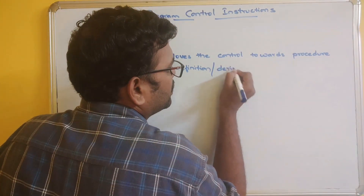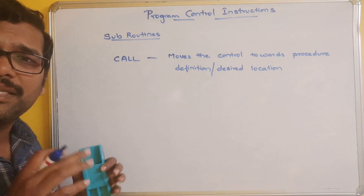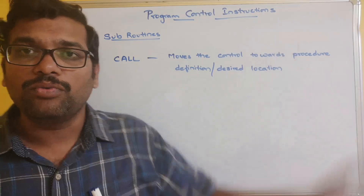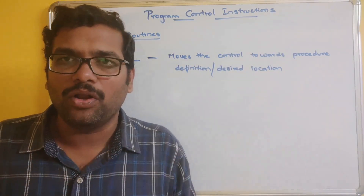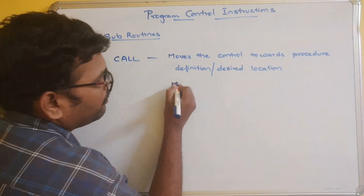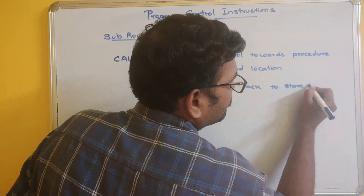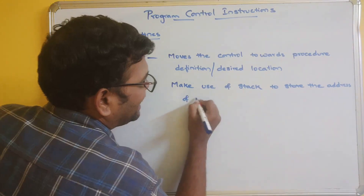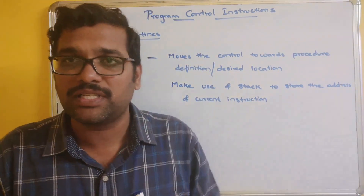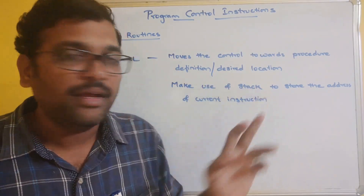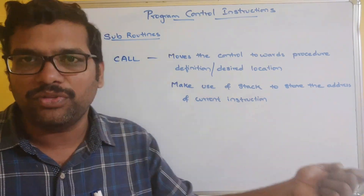The CALL instruction is similar to the jump function in that it moves the control towards the desired location. But the key difference is that CALL makes use of the stack to store the address of the current instruction, whereas jump does not save the address to the stack. Whenever the control executes the CALL instruction, the instruction address is immediately pushed into the stack.